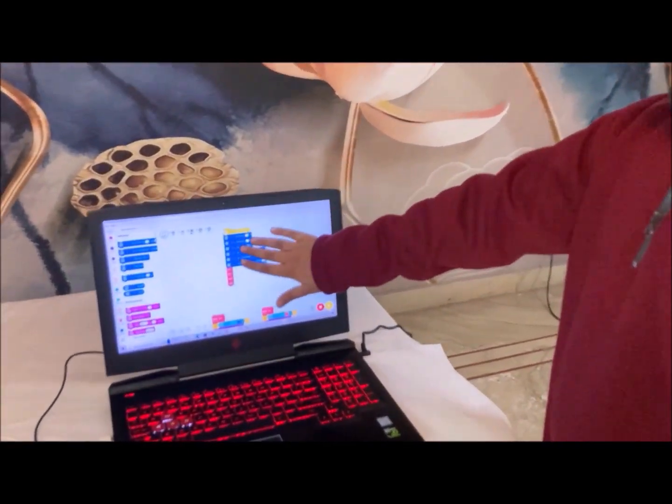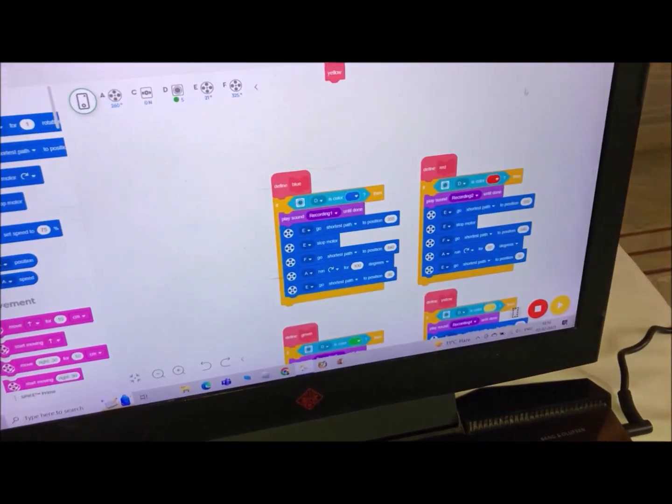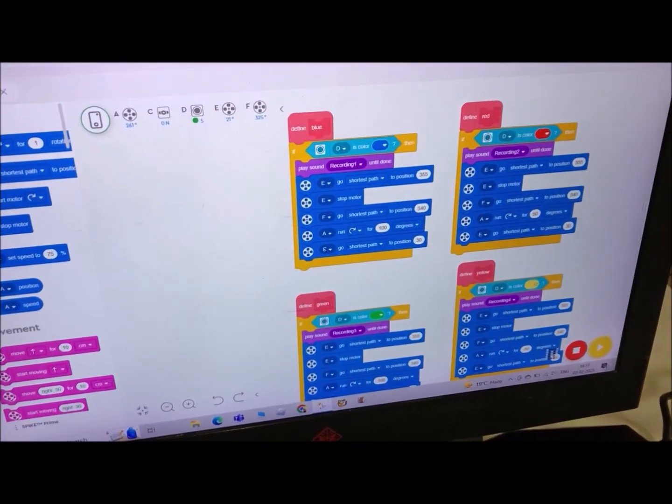This is the code for this project. This is the main part of the code. This main part commands four subparts. Each of these four subparts is for one color.